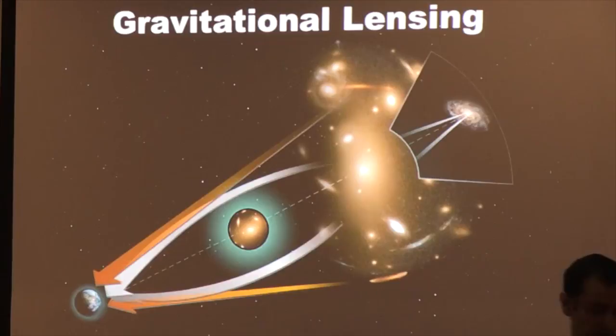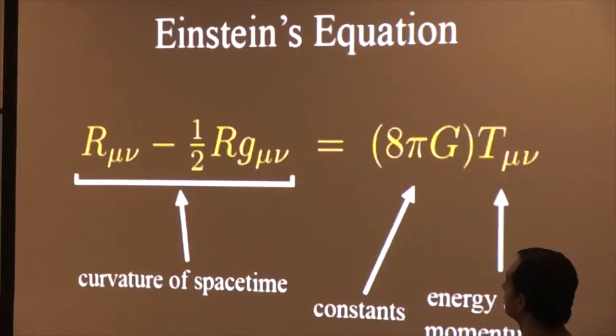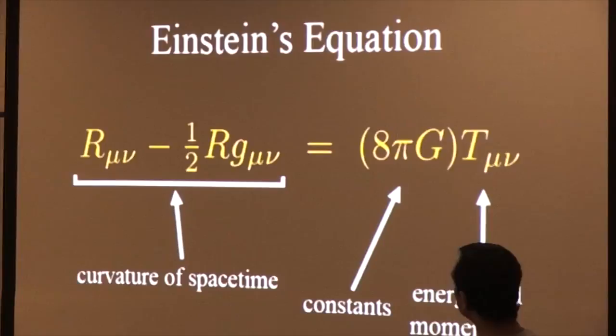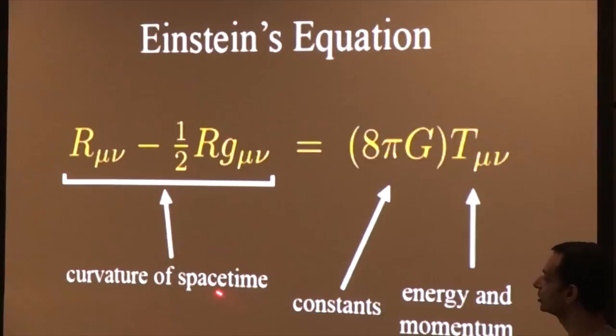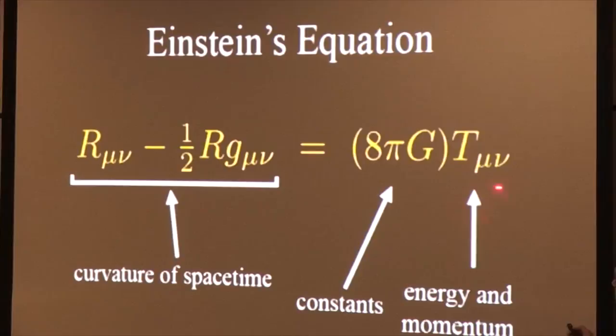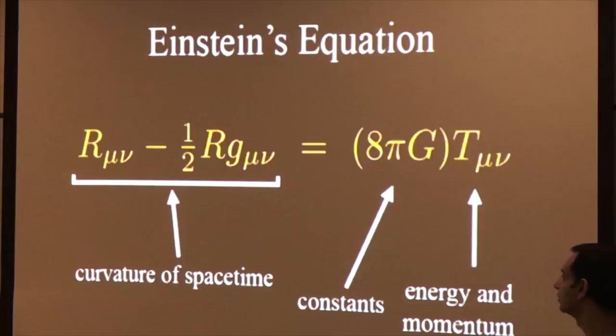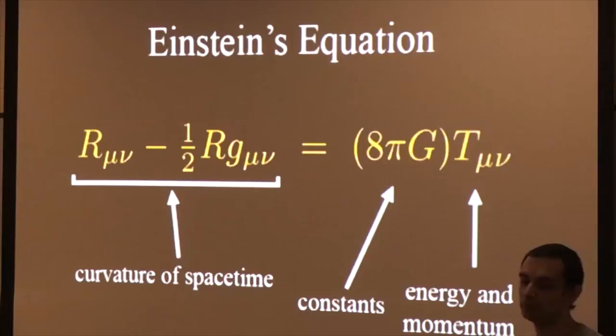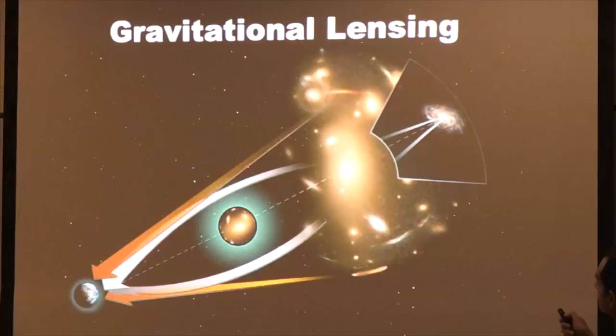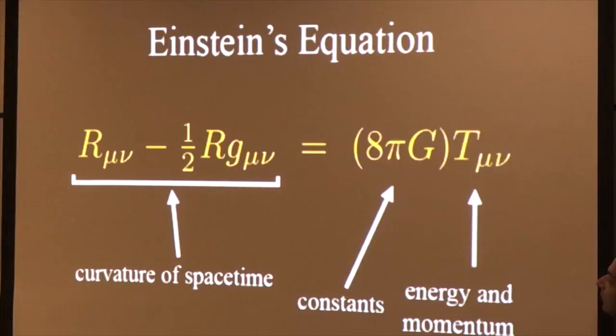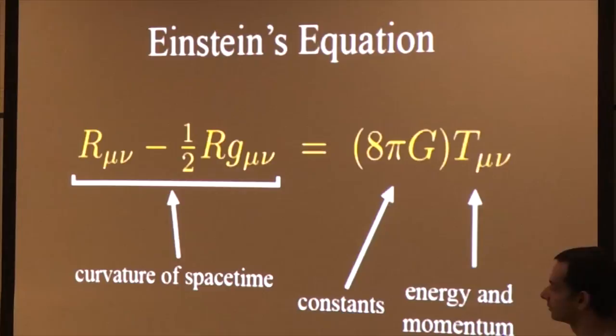The key master equation of general relativity is actually simple to explain. On the left-hand side is the Einstein tensor, giving a quantitative measure of the curvature of space-time. On the right-hand side is the energy-momentum tensor, giving a sense of how matter is distributed in the universe. Effectively, this equation says the presence of matter causes space-time to bend, and bent space-time causes matter to move differently — gravity is a dance between the geometry of space-time and matter.